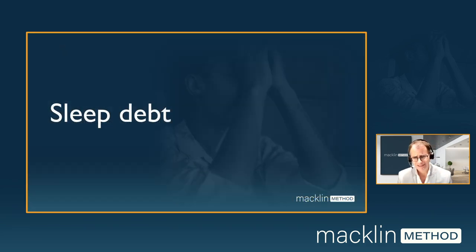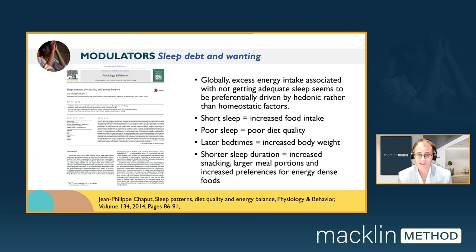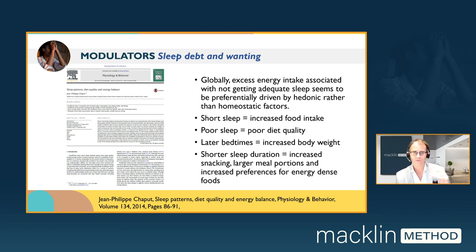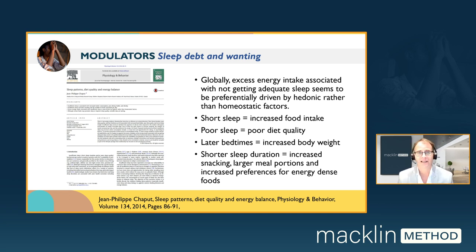What about sleep debt? A fantastic review paper by Jean-Philippe Chaput called Sleep Patterns, Diet Quality, and Energy Balance from 2014 shows that excess energy intake associated with not getting enough sleep seems to be preferentially driven by hedonic reward — wanting — rather than homeostatic factors. Short sleep equals increased food intake; poor sleep, poor diet quality; later bedtime, increased body weight; short sleep duration, increased snacking; larger meal portions; increased preferences for energy-dense foods. A significant increase in all components of motivation-driven wanting is associated with sleep debt.